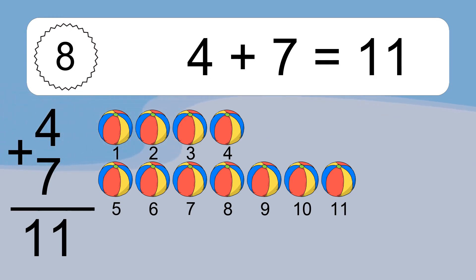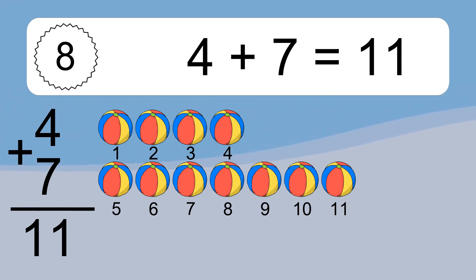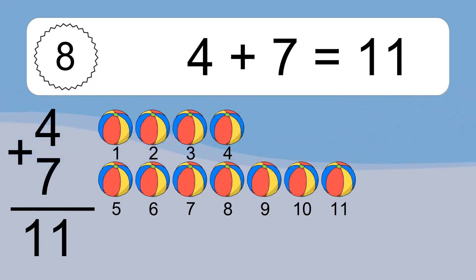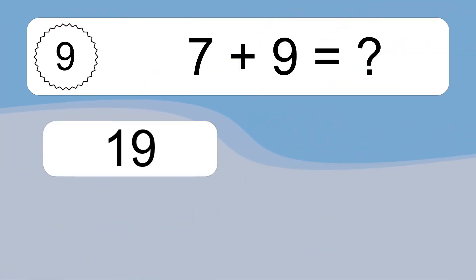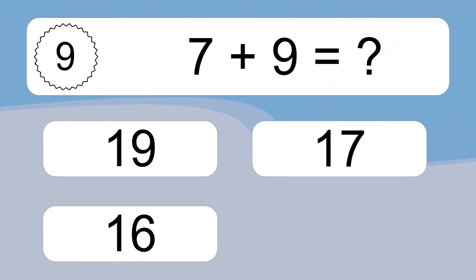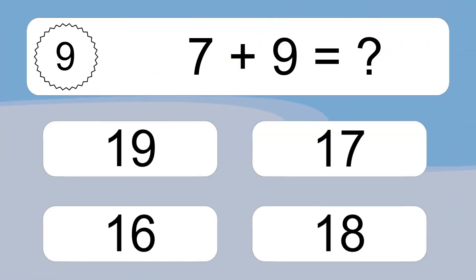Let's count it. 1, 2, 3, 4, 5, 6, 7, 8, 9, 10, 11. 7 plus 9 equals what?